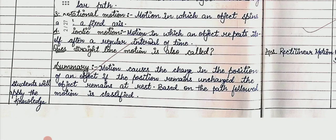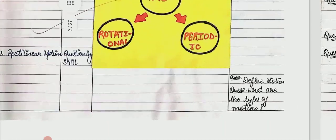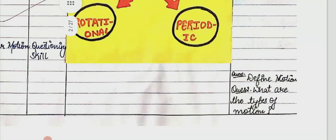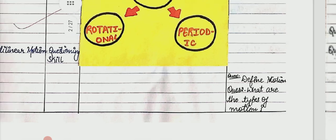Summary for students: motion causes the change in the position of an object; if the position remains unchanged, the object remains at rest; based on the path followed, motion is classified. After the summary, evaluation questions are posed: first, define motion; second, what are the types of motion?